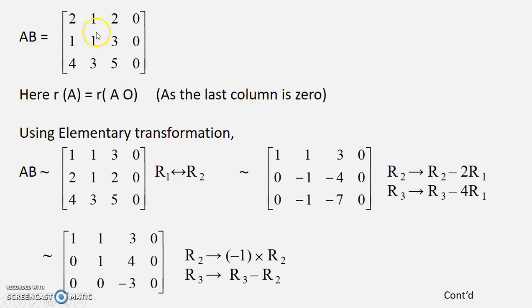We have to convert this into echelon form by using only row transformation. What we need to do is for getting 1 we can interchange these two that is what we have done here. Now we need to convert this as 0. So from second row you need to subtract 2 multiply by first row and from the third row 4 multiplied by the first row.